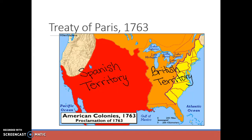Here are some of the stipulations of this treaty — you can also look at the map on your screen to see the territory division. Because the British will win, the French, per the treaty, have lost their empire in North America. England gets all former French territories such as Canada and all of the land to the east of the Mississippi River, including parts of Spanish Florida. It's worth noting the map may be slightly inaccurate — only parts of Spanish Florida end up in English control for now.